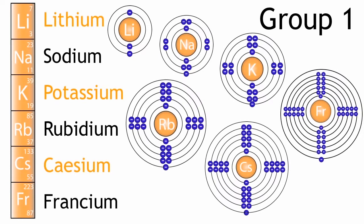If you draw out their electronic structure, the first thing you notice is they all have one electron in their outer shell.